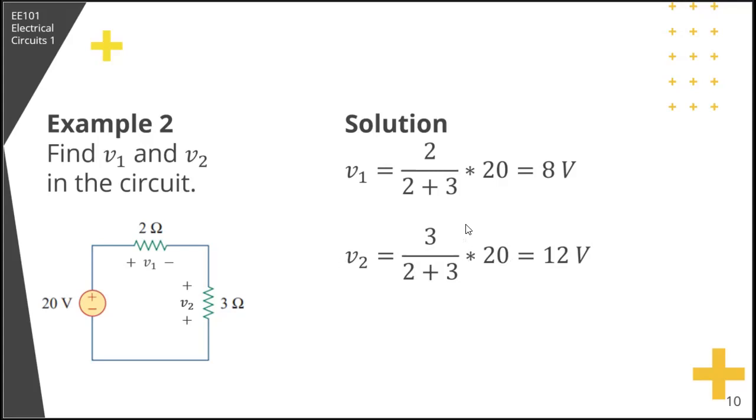Now, you could also just do for V2, you can just do 20 minus 8, then that's 12, directly. So the 20 volts is distributed between the 2. If 8 is here, then automatically 12 is here. Or if they were equal, 2 ohm and 2 ohm, then they would divide the 20 volts equally, that is 10 volts voltage drop here and 10 volts voltage drop there.